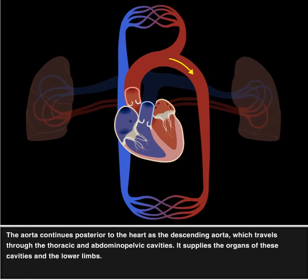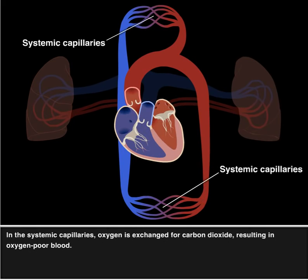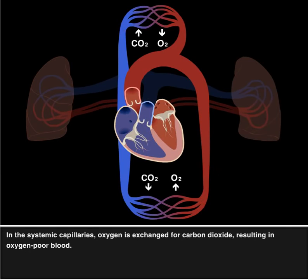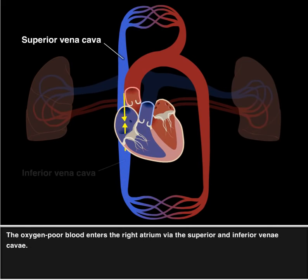The aorta continues posterior to the heart as the descending aorta, which travels through the thoracic and abdominal pelvic cavities. It supplies the organs of these cavities and the lower limbs. In the systemic capillaries, oxygen is exchanged for carbon dioxide, resulting in oxygen-poor blood. The oxygen-poor blood enters the right atrium via the superior and inferior venae cavae.